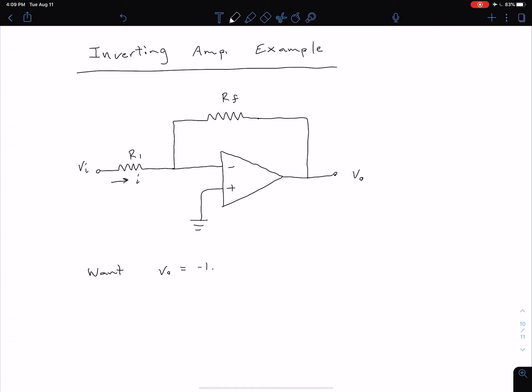V0 to be equal to negative 1.25 volts when our input voltage VI is equal to 0.5 volts, and our current I is equal to 50 microamps.